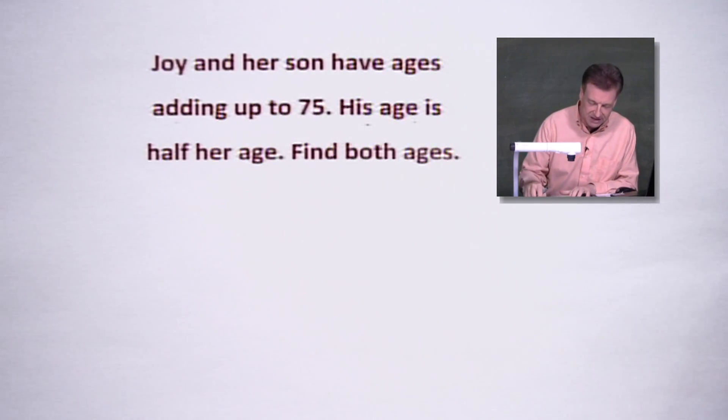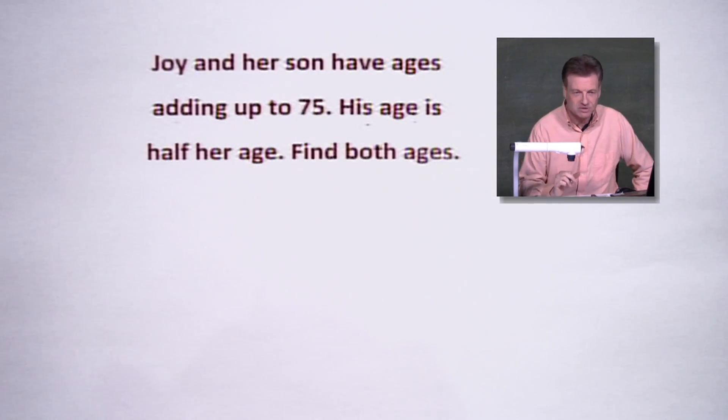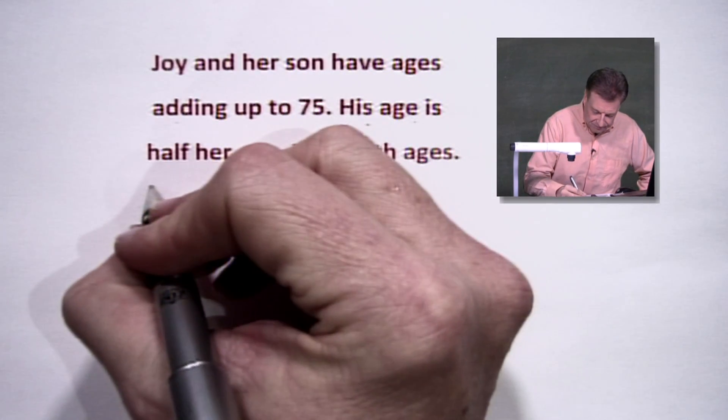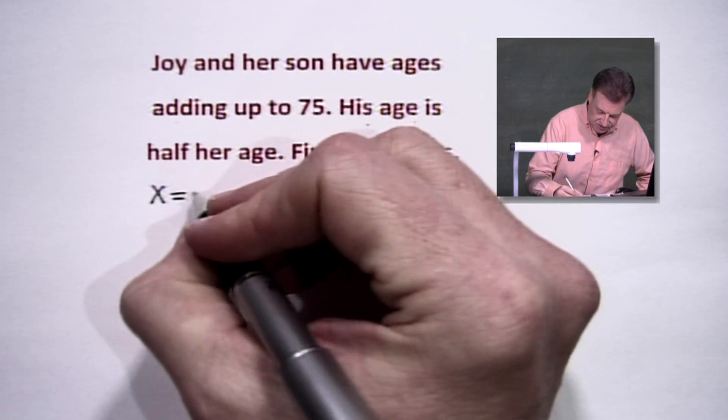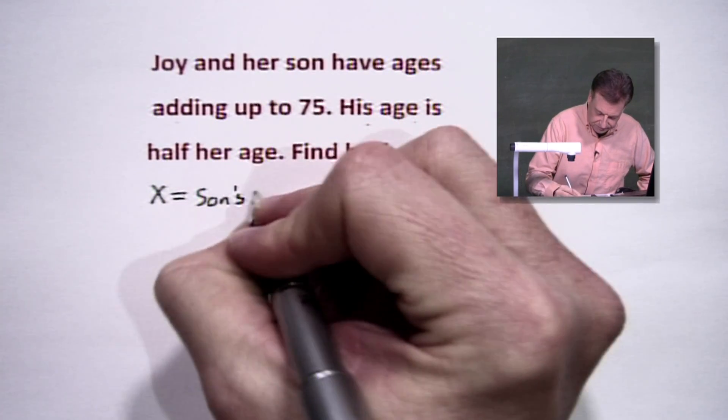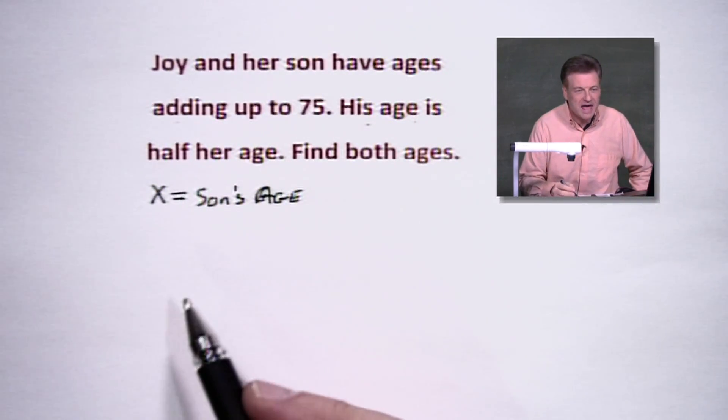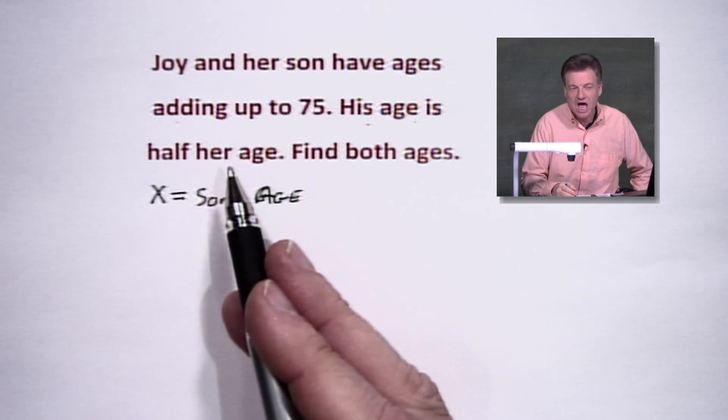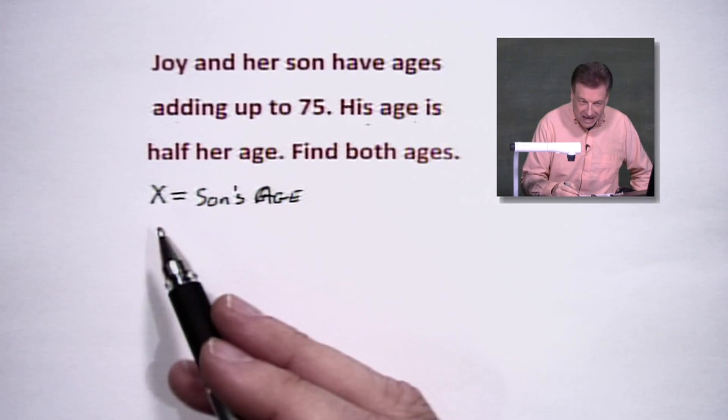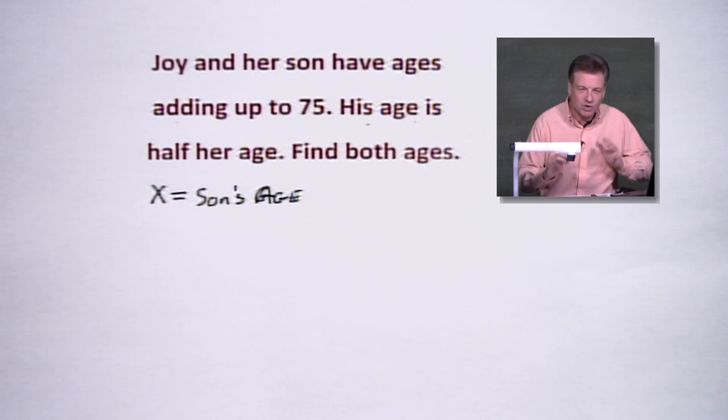So let's play with this thing a little bit. Let's actually do a little algebra to solve this. This is not a hard problem. We're going to let X represent the son's age. He says his age is half her age. Well, I'm going to let him be the first age, and then we're going to show you another way we could do it. There's more than one option on this.